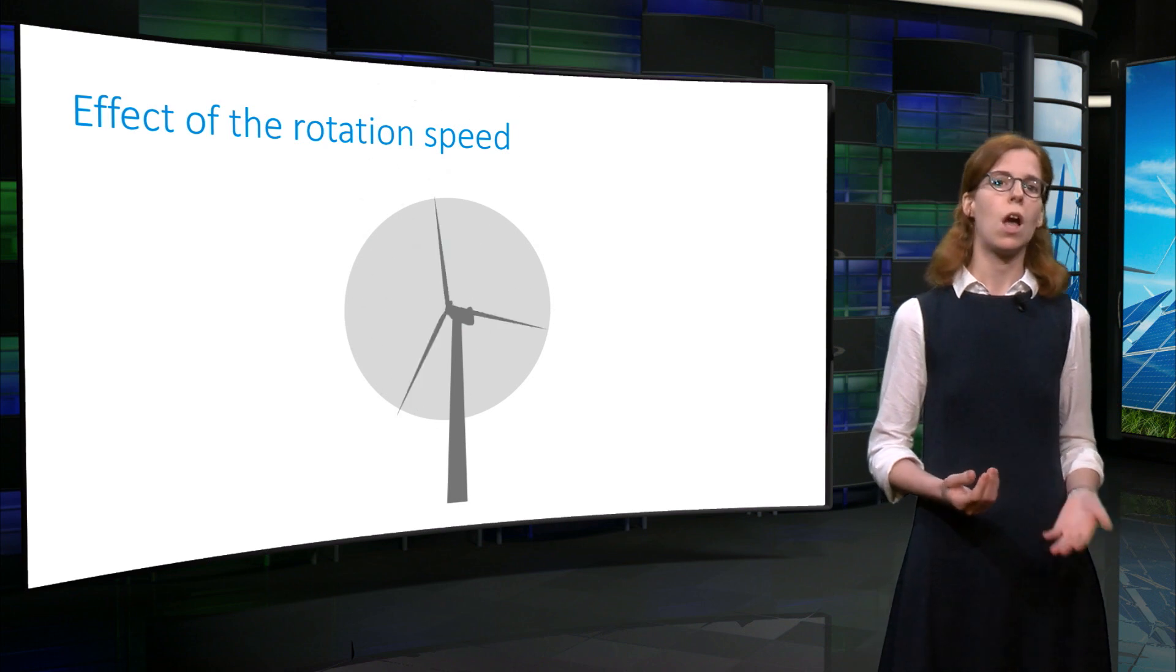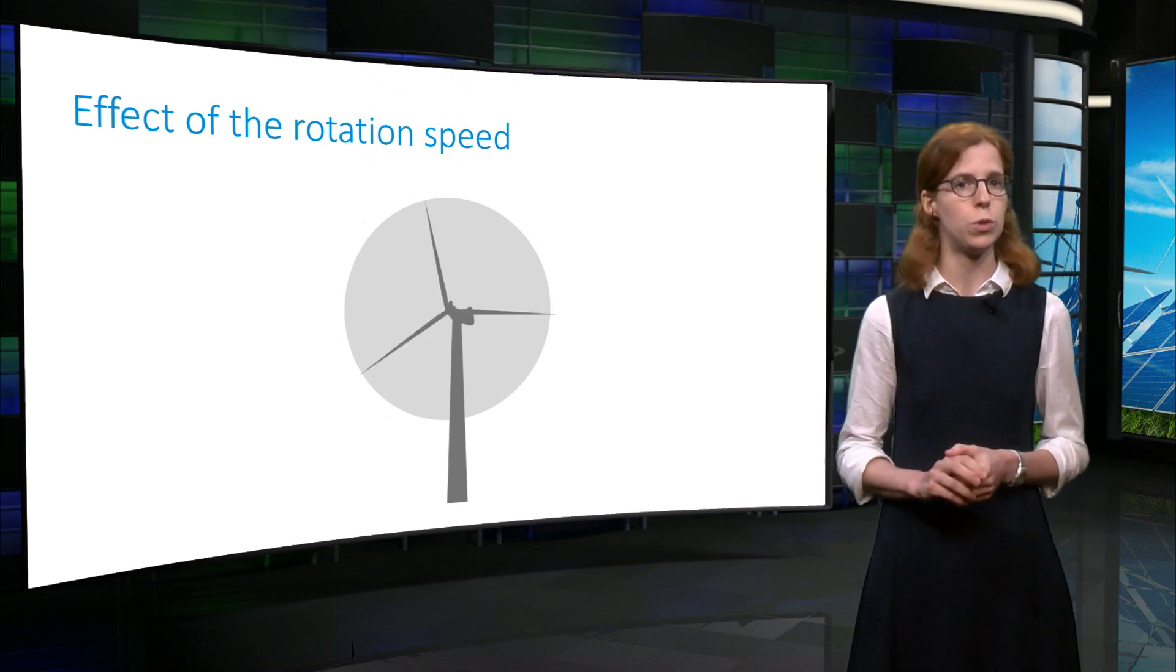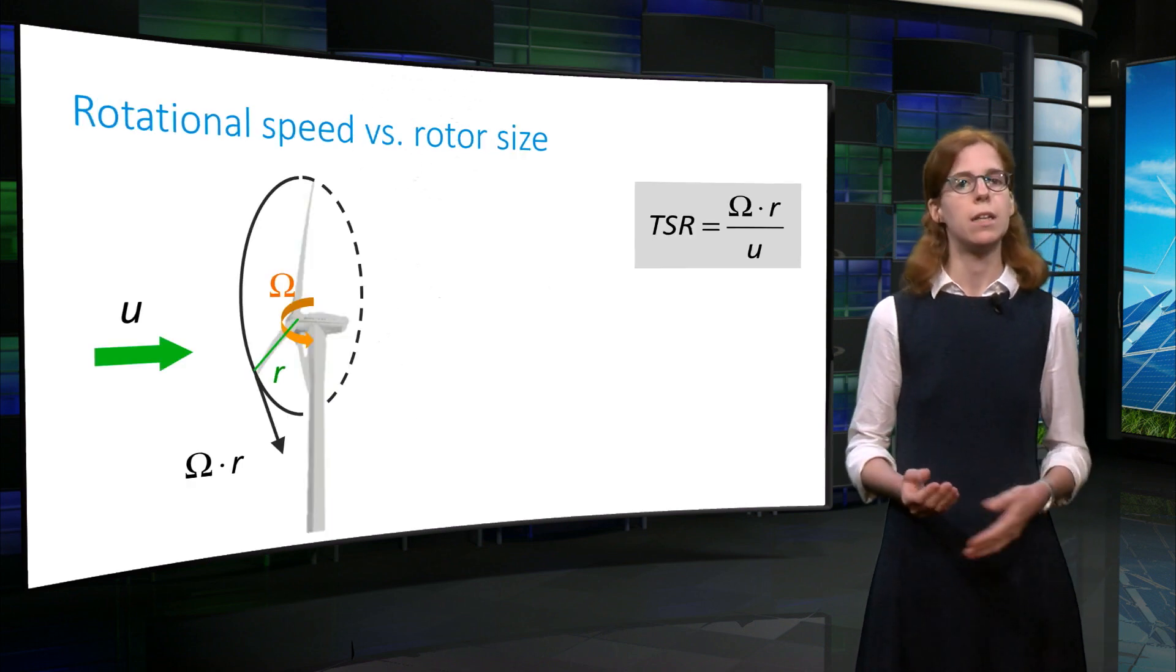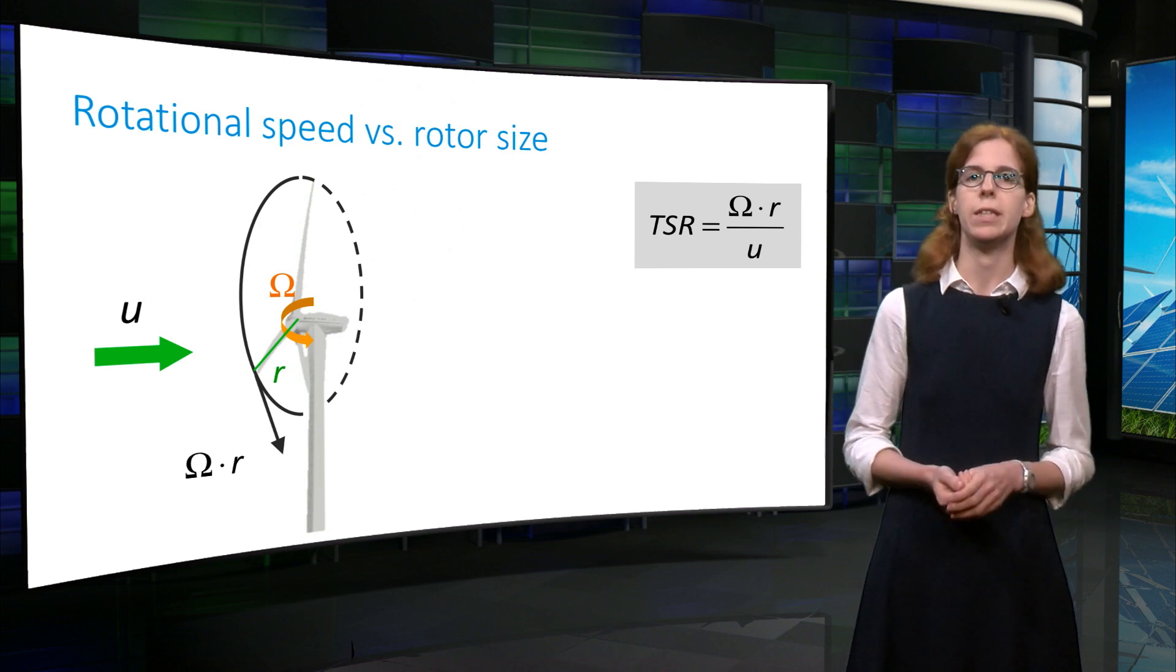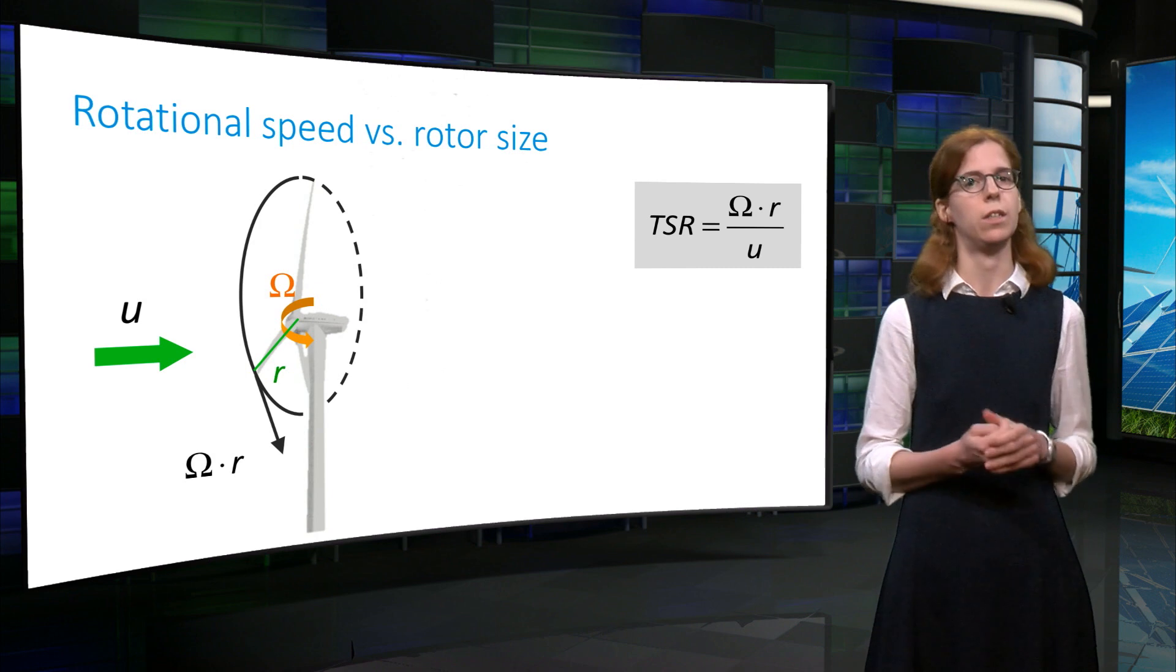In conclusion, a wind turbine that rotates faster does not necessarily produce more power. This is why, for each wind speed, there is an optimum rotational speed that maximizes the power. We will come back to this in another video.